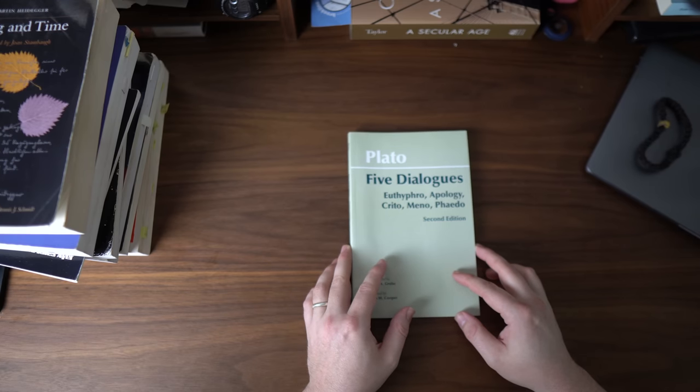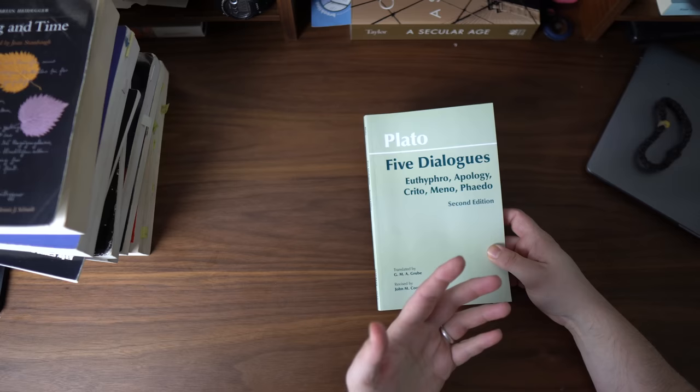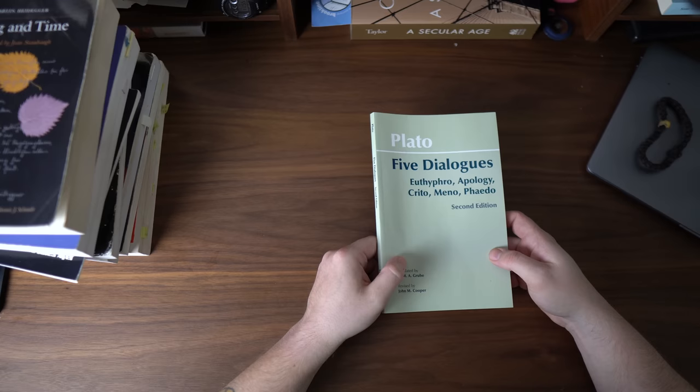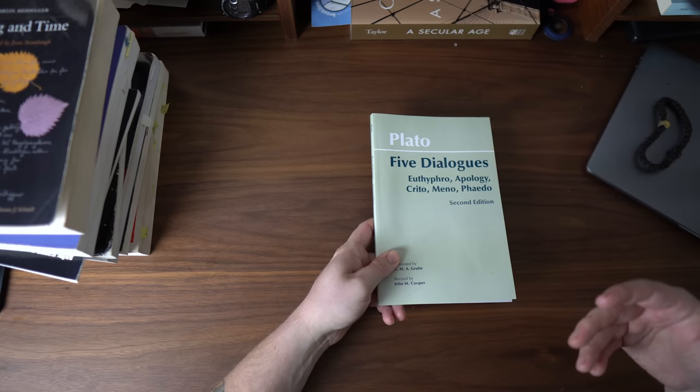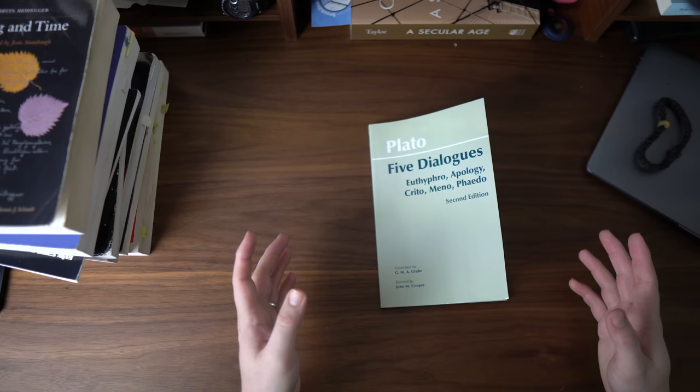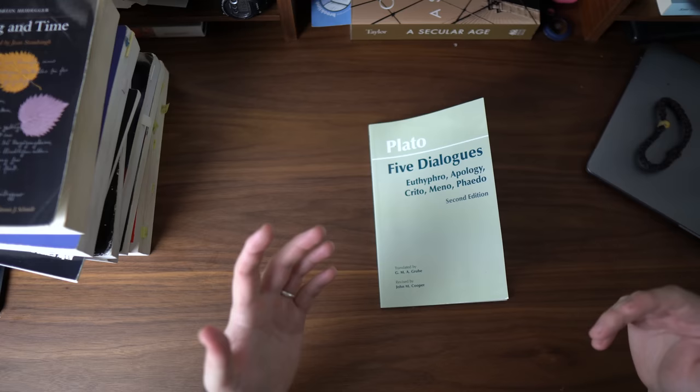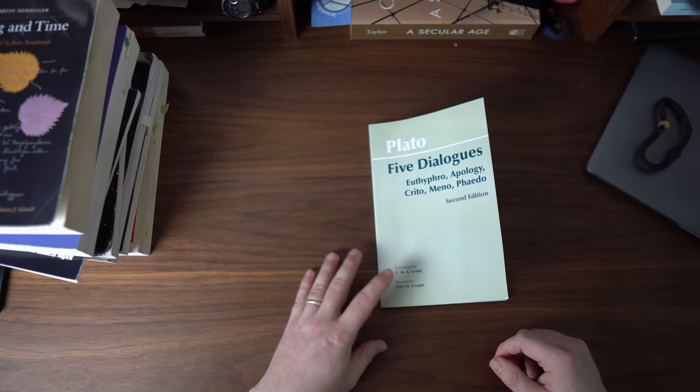So one of our missions here at The Classical Mind is to talk about how you as an ordinary reader can engage more deeply in the Western canon, in these traditional books that people from all throughout history in the West have read. One of the things we can do to make that a little bit easier is to divide things into topics. And for the first one of these topics, it's going to be philosophy.